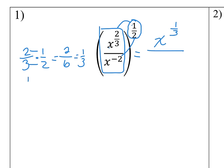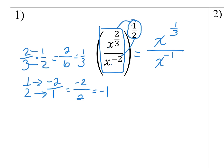Down here, if I multiply 1 half times negative 2 — remember that negative 2 is just negative 2 over 1 — multiply tops you get negative 2, multiply bottoms you get 2, you reduce that to get negative 1. So I get x to the negative first power. I still have x's in both top and bottom so I combine those. This is division so I subtract: 1 third minus negative 1 is the same as 1 third plus 1, which gives 4 over 3.